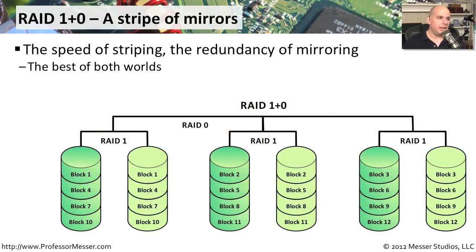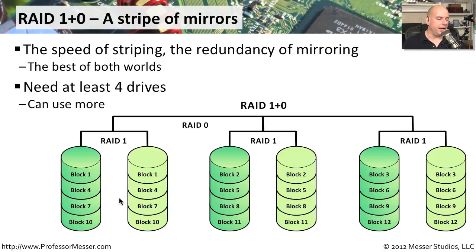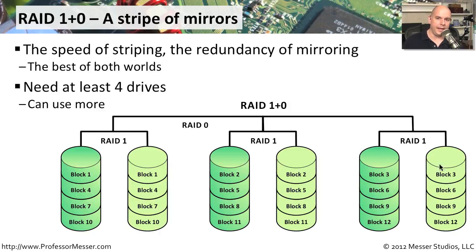Now imagine combining the speed of striping with the redundancy of mirroring — that gives you RAID 1 plus 0, also called a stripe of mirrors. You take a group of drives — at least four, with six used in this example — and build mirrors between pairs of drives. One set of mirrors here, another in the middle, and another pair on the end, each storing duplicated blocks.